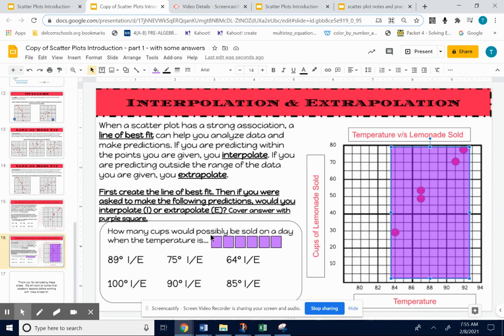So this is how many cups would possibly be sold on a day when the temperature is 89 degrees. Let's see, 89 degrees is within, here's 89 on the x-axis. 89 degrees is within the points, so that's called interpolation.